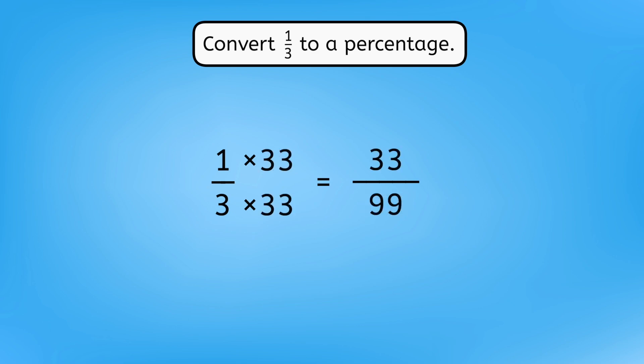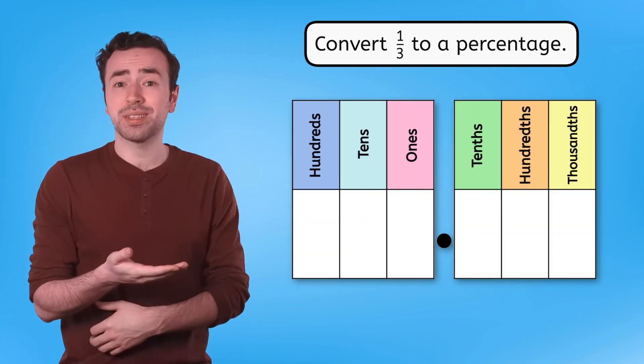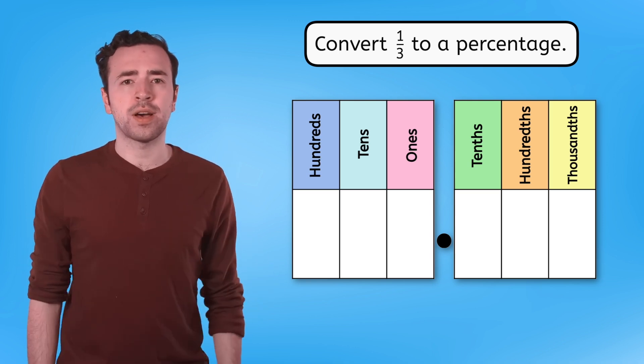Multiplying by thirty-three gives us a denominator of ninety-nine. That's too low. And multiplying by thirty-four gives us the fraction thirty-four of one-hundred-two, and that's too high. Guess we can't use the fraction out of one-hundred strategy. How about the place value chart? Would that help us? Unfortunately, we can't write a fraction in the place value chart.